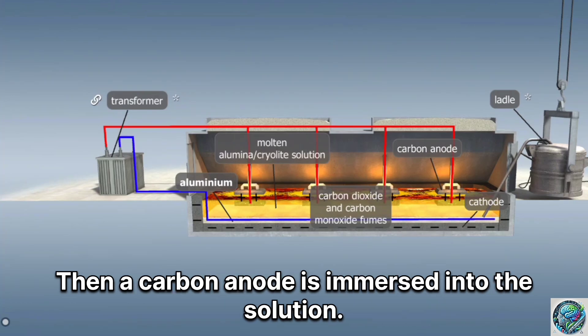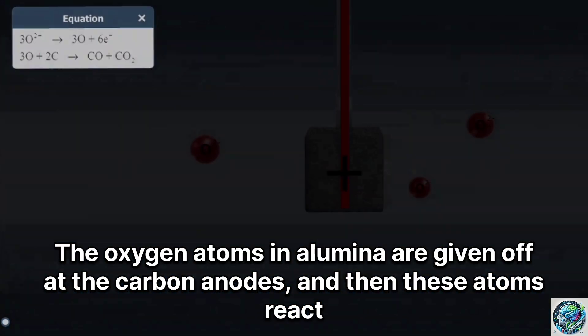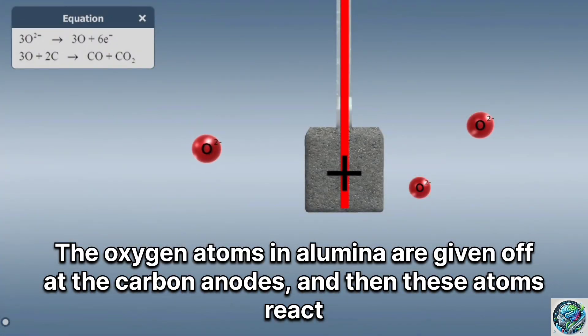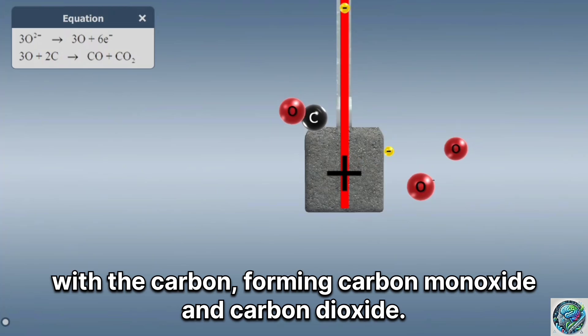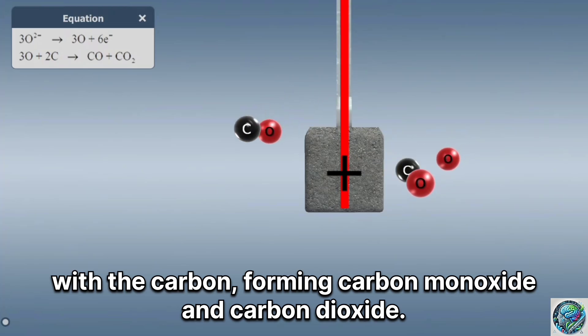Then, a carbon anode is immersed into the solution. The oxygen atoms in alumina are given off at the carbon anodes, and then these atoms react with the carbon, forming carbon monoxide and carbon dioxide.